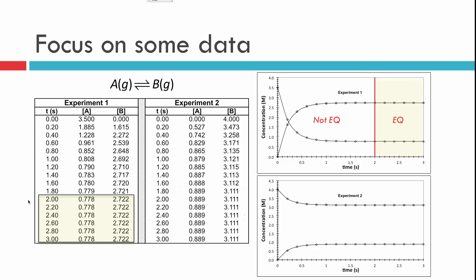Same thing for experiment two. We can see that starting with different initial amounts, in this case starting with no reactants and all products, we get a different result. We end up with a different concentration of products or reactants when we reach equilibrium, and that happens at a different time.